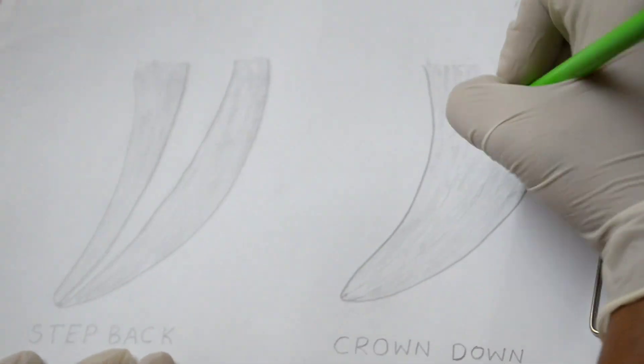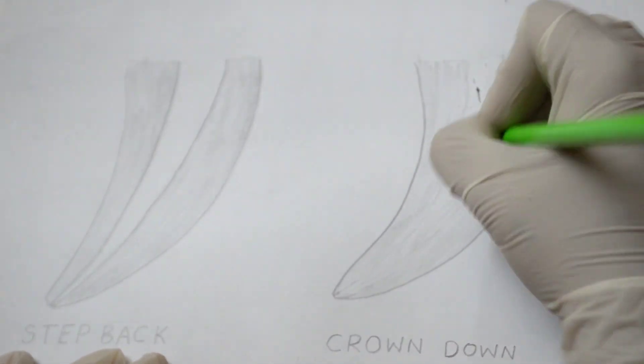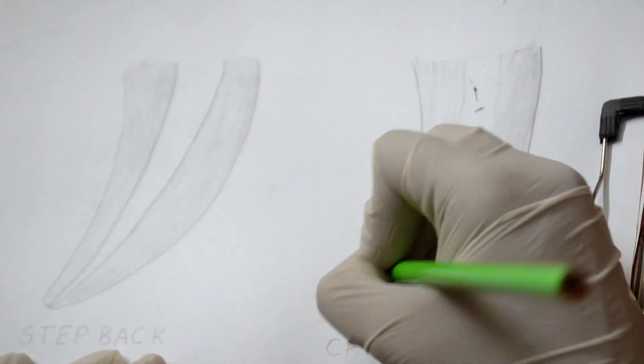While the concept of first instrumenting the coronal one-third of the root canal before apical shaping is known as crown down technique.